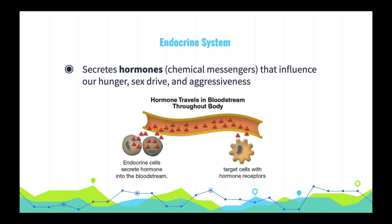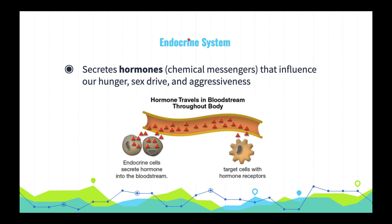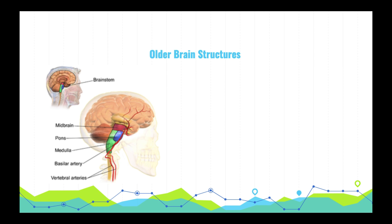Remember the endocrine system, which secretes hormones — chemical messengers that act on the brain and influence our interest in food, sex, and aggression. The next part of Unit 3 looks at the varying structures of the brain. There are definitely a couple of questions from this part on the AP test, so pay attention. Let's look at some of the oldest parts of the brain — the parts we share most with other animals — the brainstem and the thalamus.